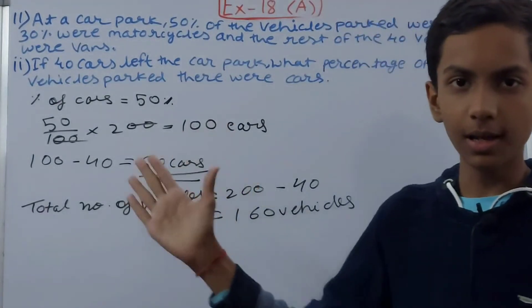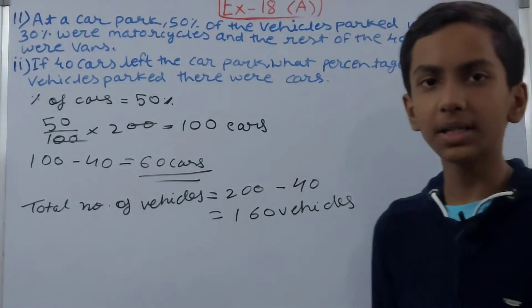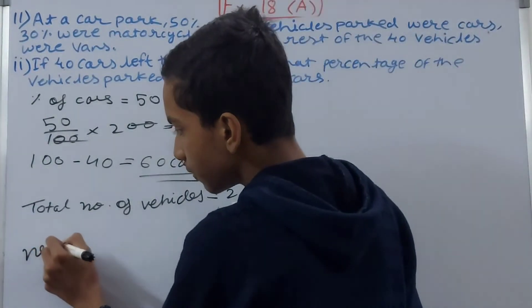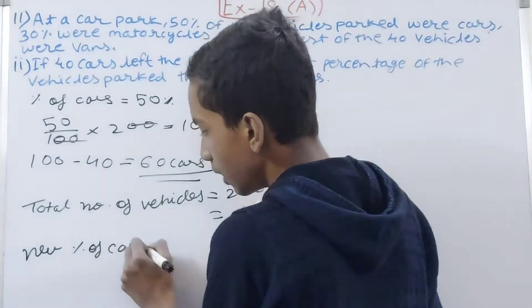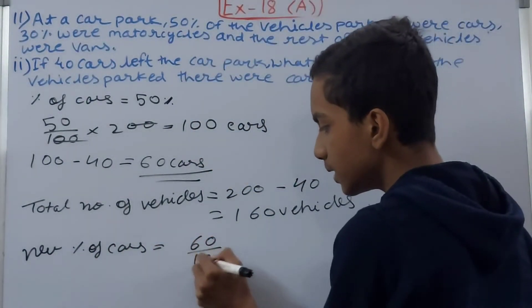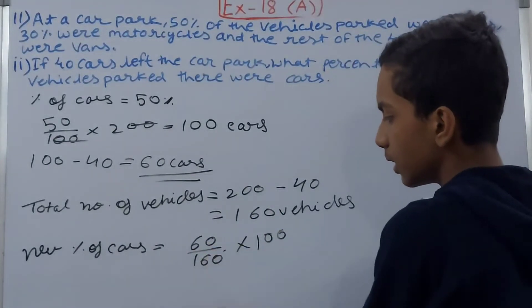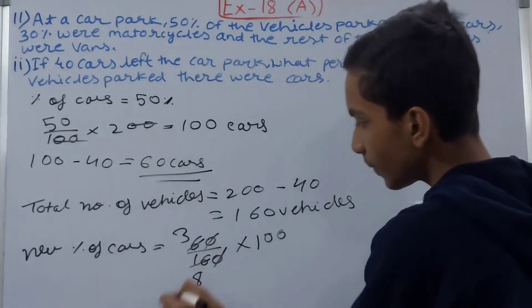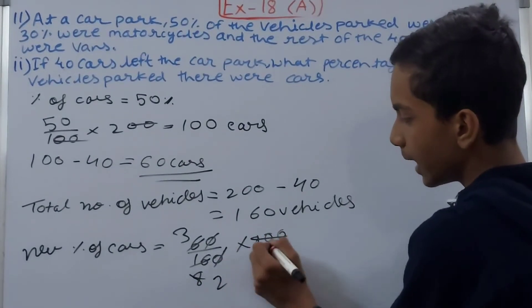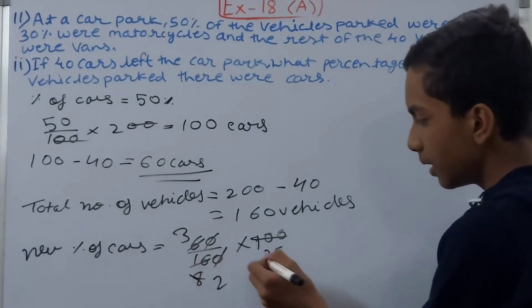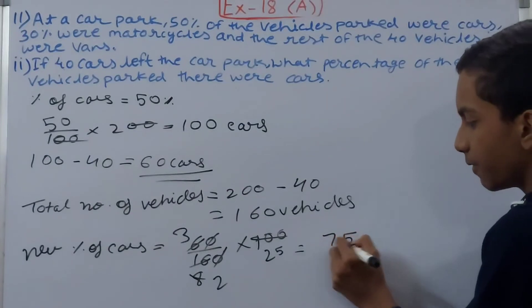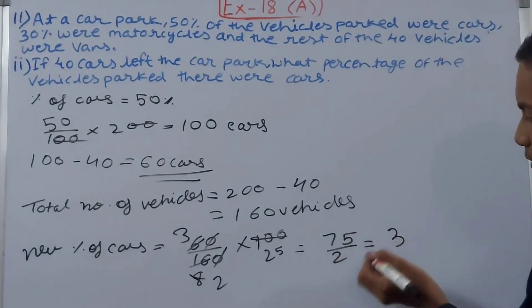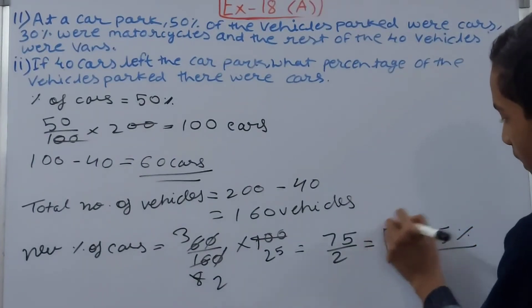Out of 160 vehicles, there are now 60 cars. We need to find the new percentage of cars: 60/160 × 100. Canceling zeros and simplifying — dividing by 4 gives 2 and 25 — so we get 75/2, which equals 37.5%. This is our answer.